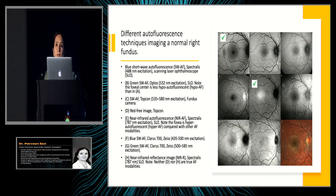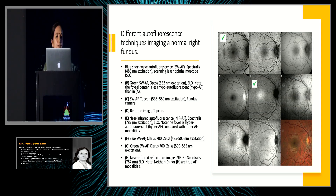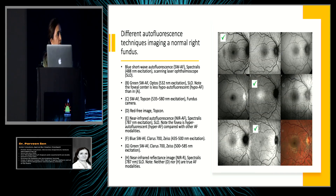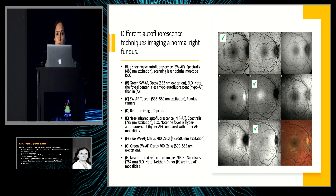Depending upon the emission filter, the stimulating light, the kind of camera and other settings, you could have various autofluorescence types that have been described. The focus today is on infrared autofluorescence and how it compares with short-wave. I will also cover near infrared reflectance (NIR), because it closely follows the infrared autofluorescence and is more freely available compared to NIA.